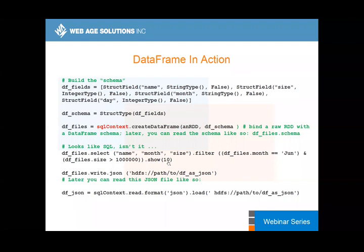We can load a file through RDD — maybe from HDFS — but now we can save it as JSON using the DataFrame API's write object, which has useful methods like json, csv, and others. Later, you would read it back as JSON because it was saved as JSON, and the system would understand the structure — name, month, size — making properties and values available to you through the DataFrame which contains your JSON data.